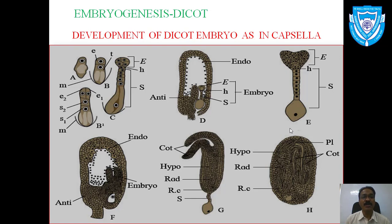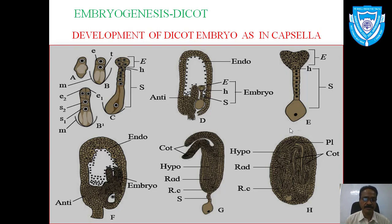Now let us start with the next topic: embryogenesis. Embryogenesis is the development of the embryo starting from the zygote. Embryogenesis in dicot and monocot takes place in a similar manner up to the octant stage, but after the octant stage, dicot plants produce two cotyledons while monocot produces a single cotyledon.